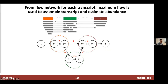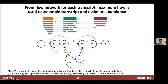Stringtie uses a number of different areas of math: graph theory, flow theory, optimization theory, and heuristics to estimate abundance levels through this graph. This conceptually maps onto the exon-exon junction connections from your alignments. To summarize: Stringtie uses basic graph theory for the splice graph, heuristics for the heaviest graph path, flow network construction, and optimization theory for the maximum flow calculation. There is a very detailed Stringtie paper that covers the definitions and underlying math.